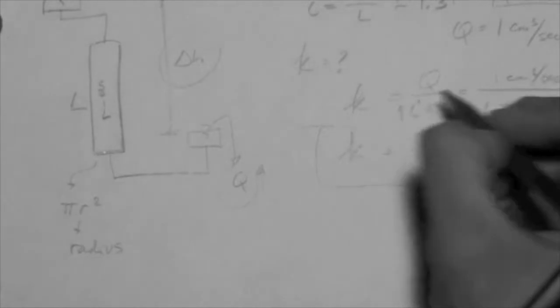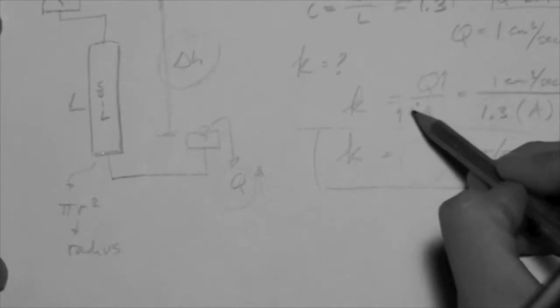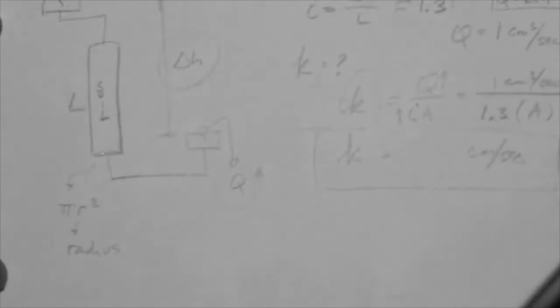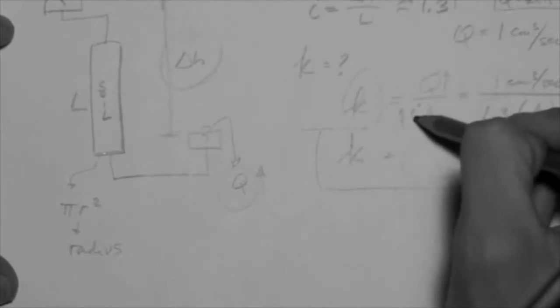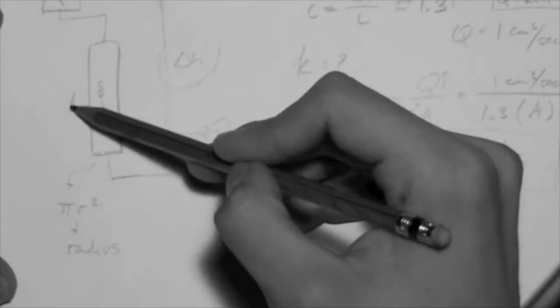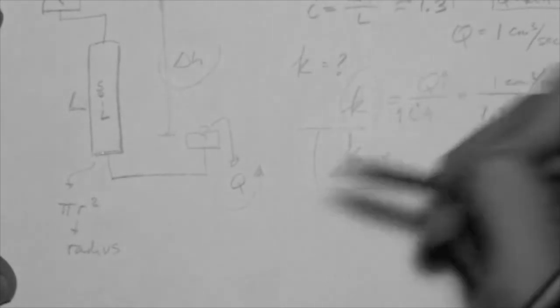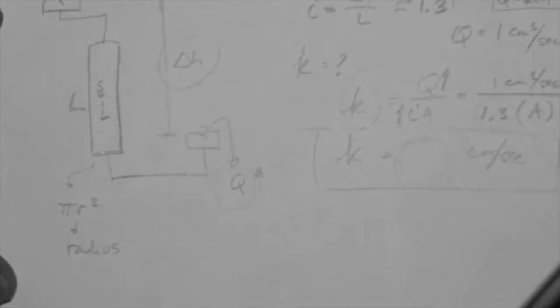And as long as you are in the laminar regime, a rise in I will lead to a rise in Q that is proportional. They are proportional to each other, these two rises. And therefore, what you will get is a constant K. The K will not change. For a given soil, of course. So, if you increase the delta H and leave L constant, the I will go up, and Q will go up by the same proportion, such that this rise will cancel this rise out, and the K that you get will be a constant.